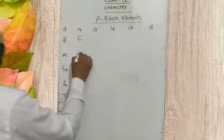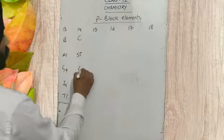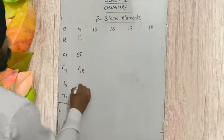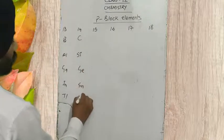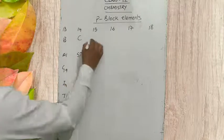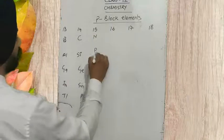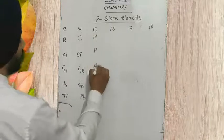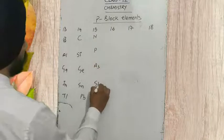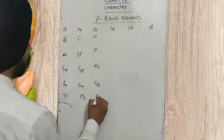Group 14 contains: carbon, silicon, germanium, tin, and lead. Group 15 contains: nitrogen, phosphorus, arsenic, antimony, and bismuth.